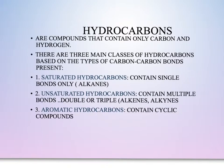Starting with our first organic compounds, we will begin with hydrocarbons. Hydrocarbons are the simplest organic compounds because they are composed of only carbon and hydrogen. They can be grouped into three categories: saturated, meaning they only have single bonds — these will be alkanes; unsaturated, meaning they have multiple bonds — if they have double bonds they're alkenes, and if they have triple bonds they're alkynes; and if they have a ringed or cyclic structure, we're looking at aromatic compounds.